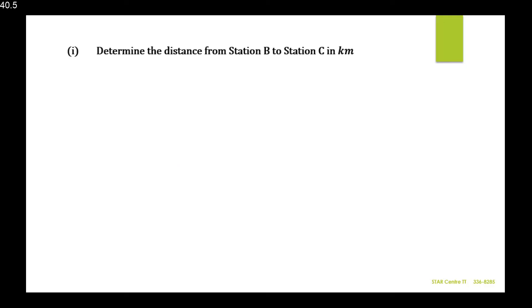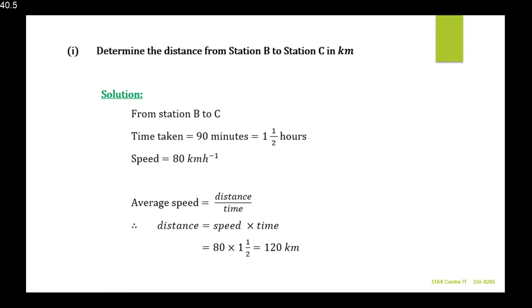Part 1: determine the distance from station B to station C in kilometers. The relevant information is that the time taken from B to C was 90 minutes and the average speed was 80 kilometers per hour. We represent time in hours since speed is in km/h. 90 minutes equals one and a half hours.